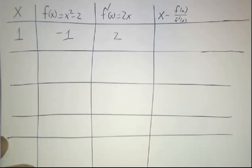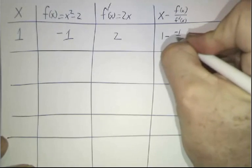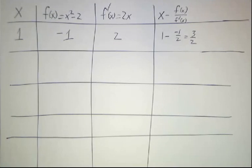And our new and improved guess is going to be 1 minus negative 1 over 2. So that's 3 halves. So that's 1.5. That does a little bit better.